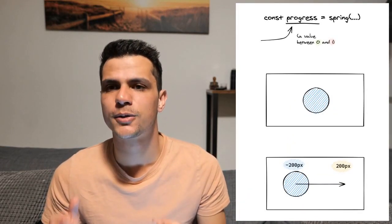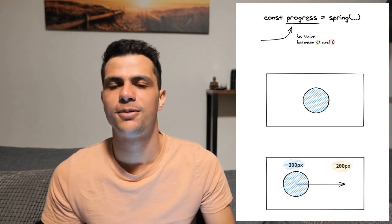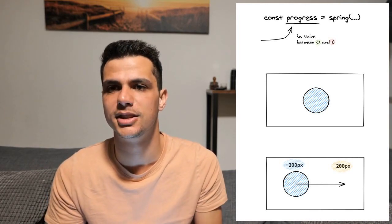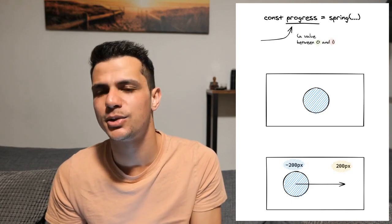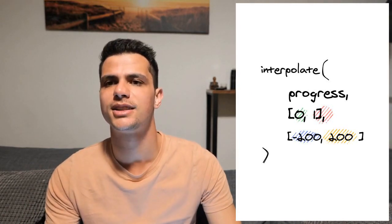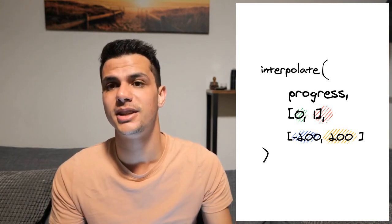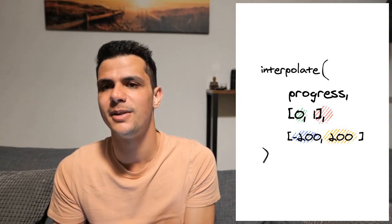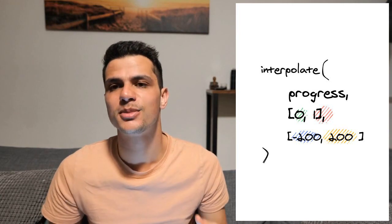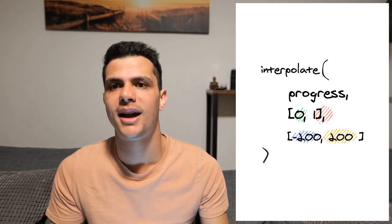Let's take it a step further. Say we already have a value from 0 to 1 generated by Remotion's spring function, and an element placed at the center of our composition that we want to animate on the x-axis from minus 200 to 200. We pass in the spring value as the first argument, 0 and 1 as the second parameter, and minus 200 and 200 as the third parameter. As the output we get the x translation, which we apply using the style property.